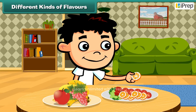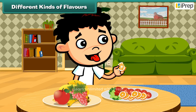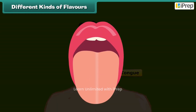Different kinds of flavours: Different food items have different tastes. Taste buds in front of the tongue taste sweet things. Taste buds at the back of the tongue taste bitter things. Taste buds at the back of both sides taste sour things, and taste buds in the front of both sides taste salty things.